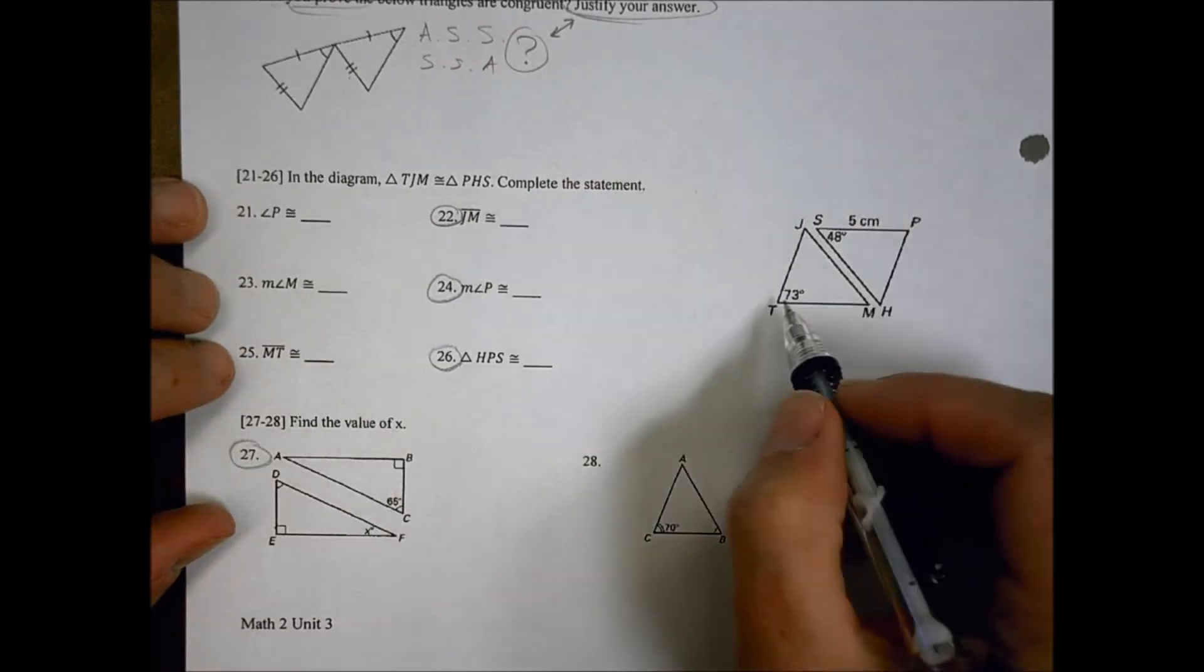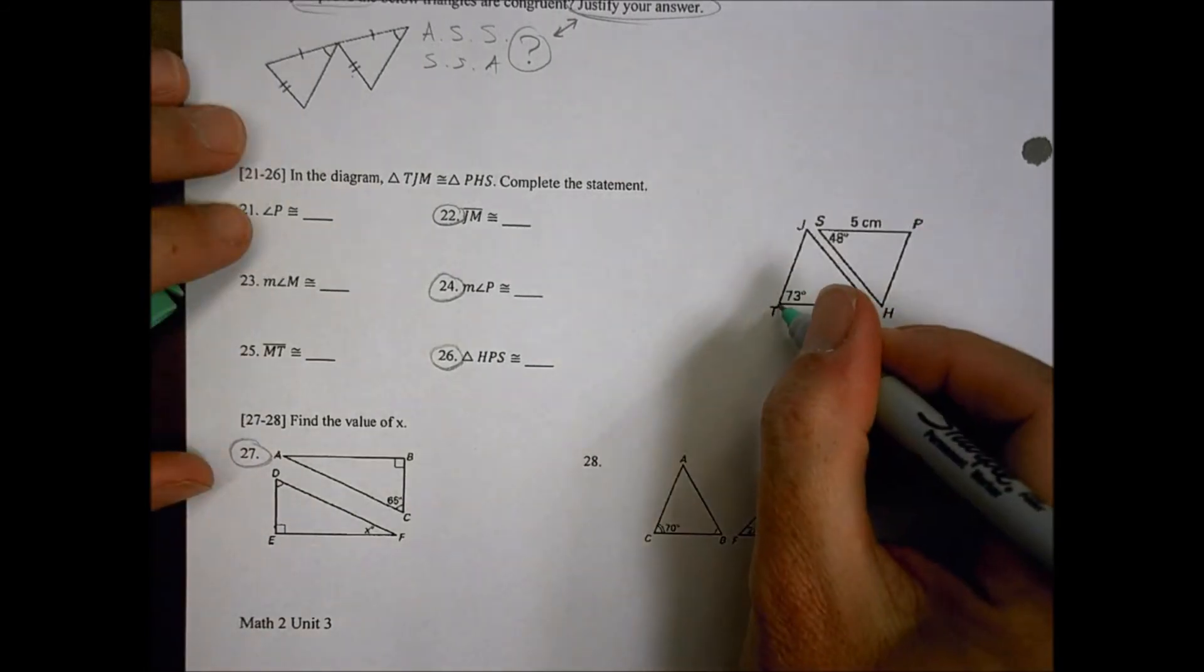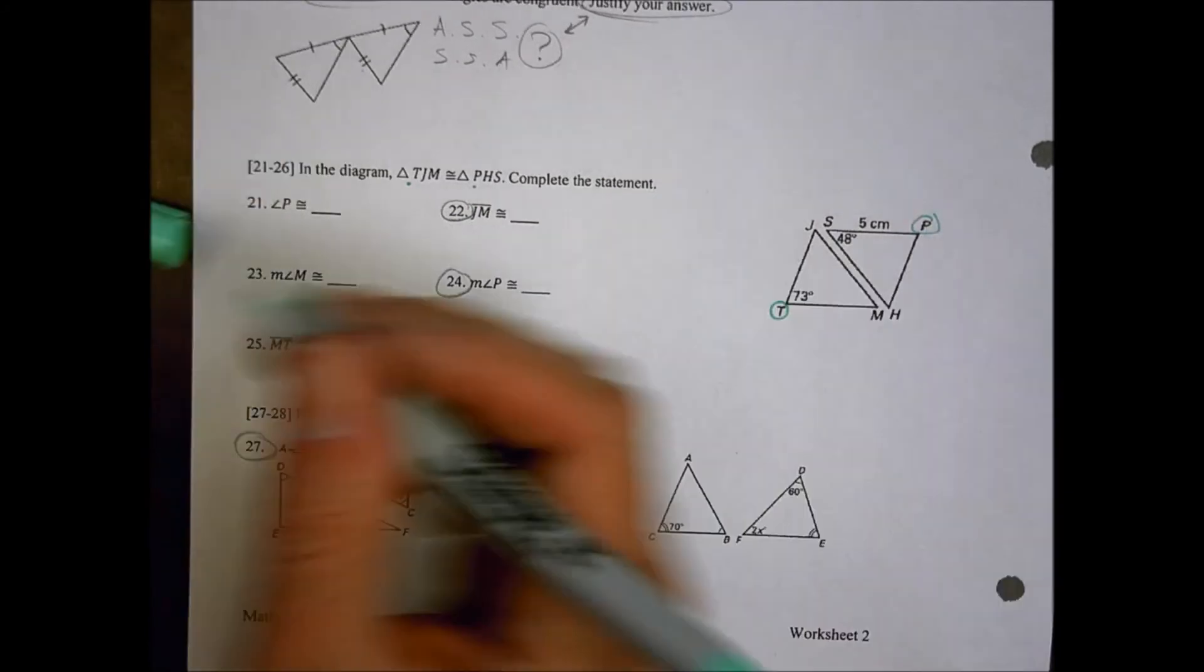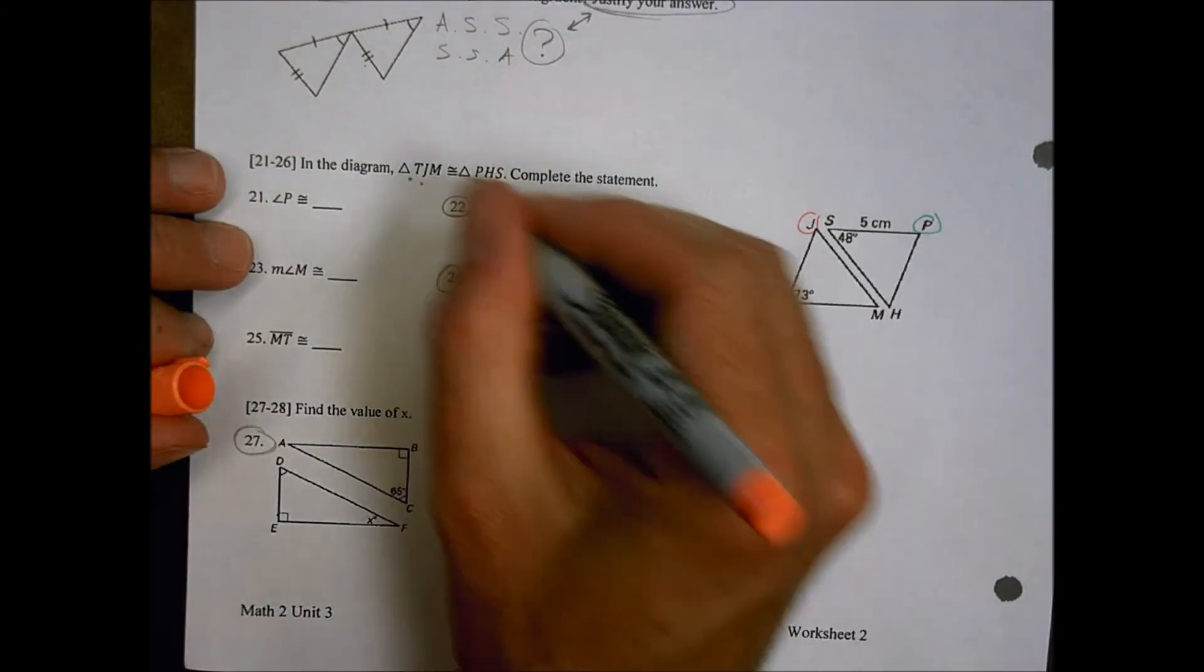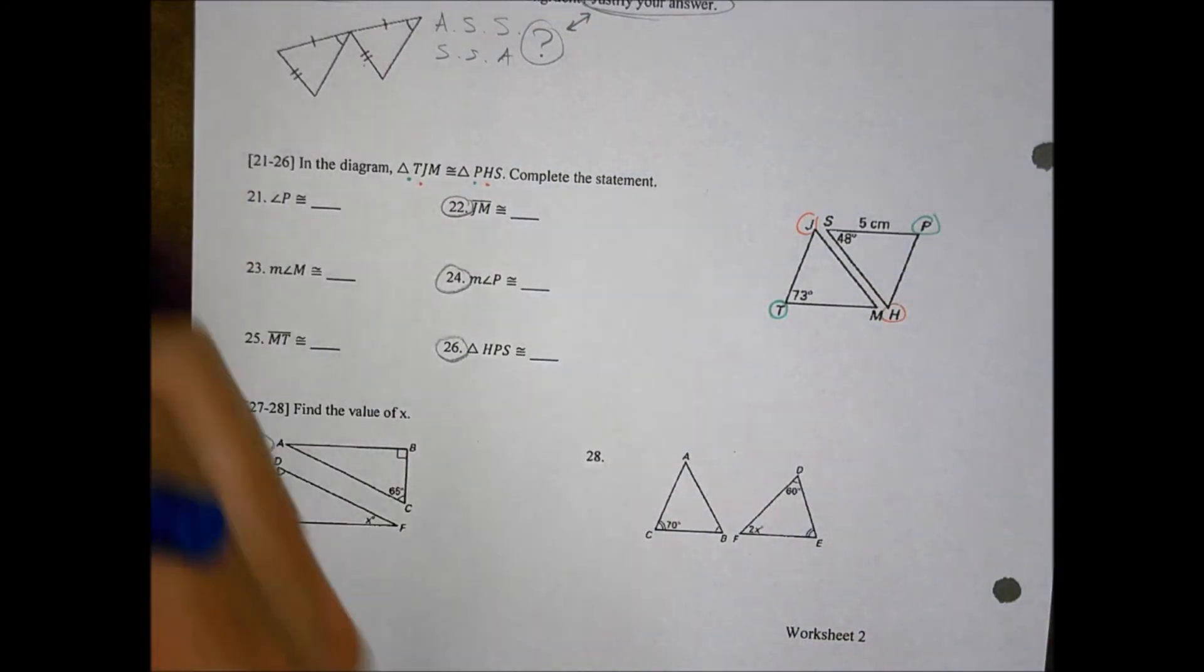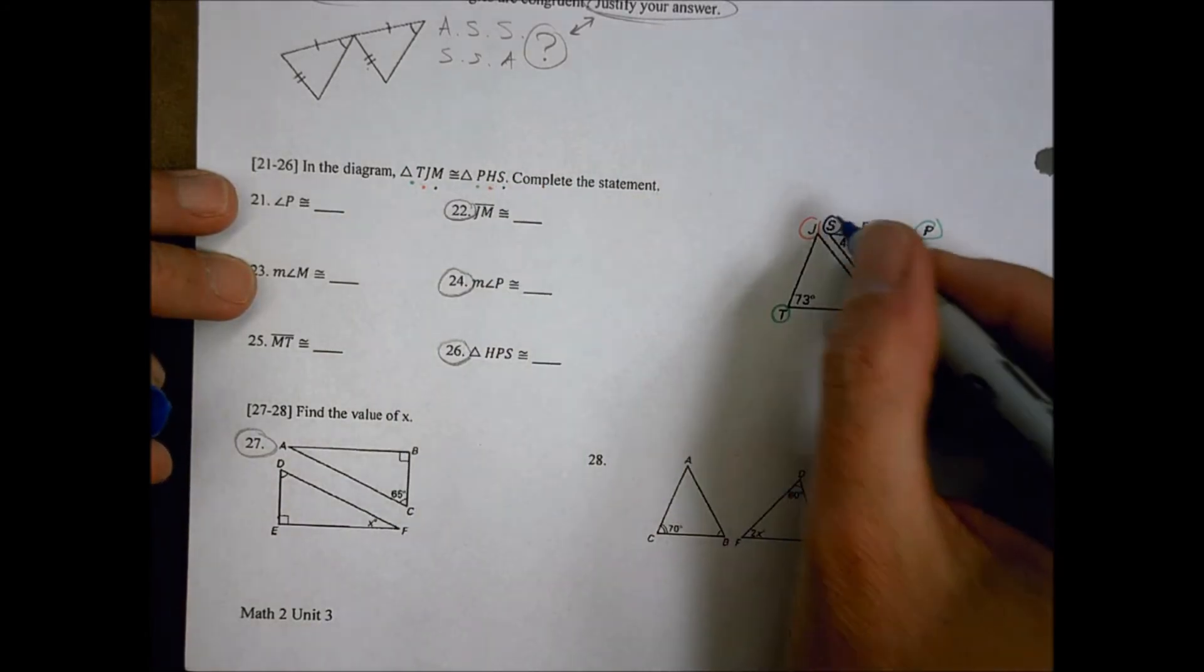Moving down to the last one, the next last one, sorry, we have TJM is congruent to PHS. So here's T, T, which matches the P. And I have J, J, which matches the H, H. And then I have M, M, which matches the S, S.